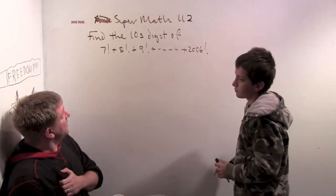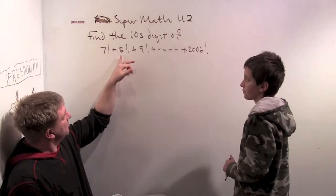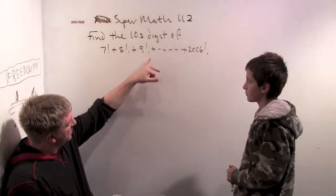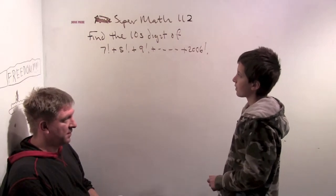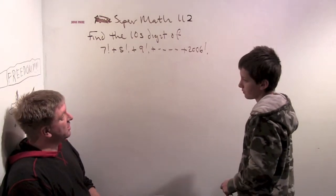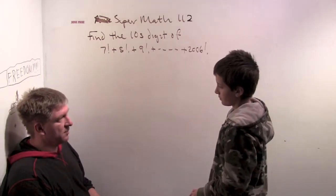So the question is find the tens digit of 7 factorial plus 8 factorial plus 9 factorial plus all the way up to 2006 factorial. Now, before we even start in on this, when you see this problem what do you think?